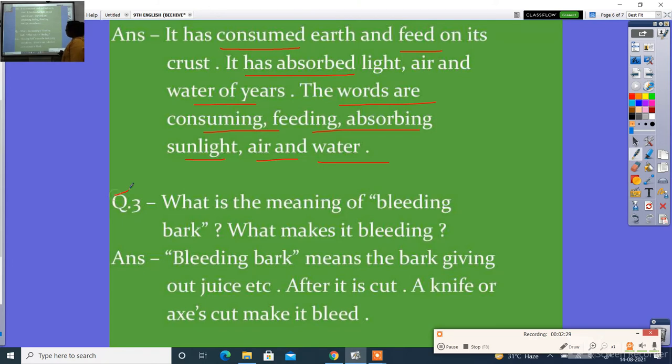Question number three: What is the meaning of bleeding bark? What makes it bleeding? Khoon bahati chal ka kya arth hai? Aur uska khoon kaise baheta hai? Answer: Bleeding bark means the bark giving out juice etc. after it is cut. A knife or axe's cut makes it bleed. Khoon bahati chal ka matlab hai uski katne se baheta ras ya ras. Ek chakku ya kuhaari se lagi chot bhi khoon behta hai.